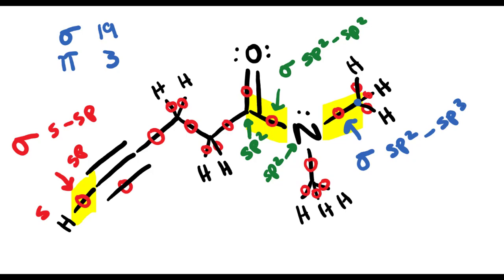None of the examples I gave are double bonds, but remember, double bonds also have pi bond overlap. Pi bond overlap is always going to be p to p overlap.